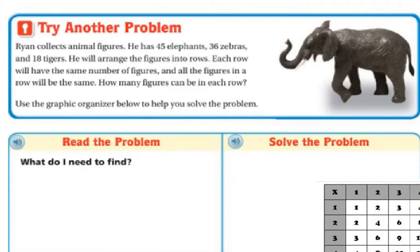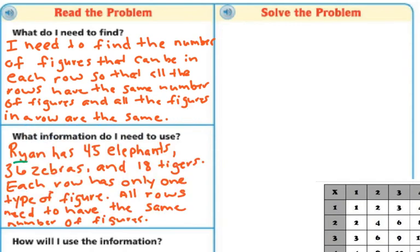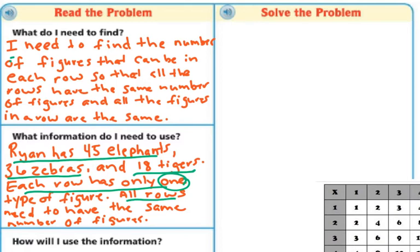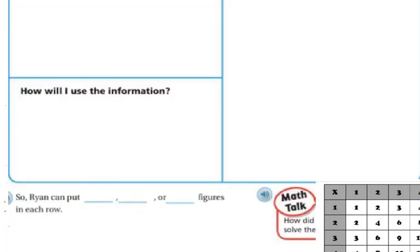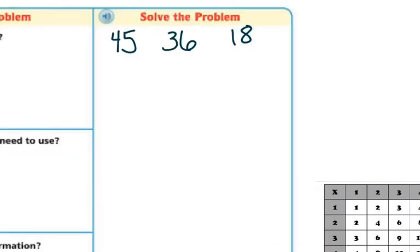This is exactly like what we did before. What do I need to find? I need to find the number of figures that can be in each row so that all the rows have the same number of figures, and all the figures in a row are the same. What information do I need to use? Ryan has 45 elephants, 36 zebras, and 18 tigers. Again, I look back in the problem to find that — each row needs only one type of figure, and all rows need the same number of figures.